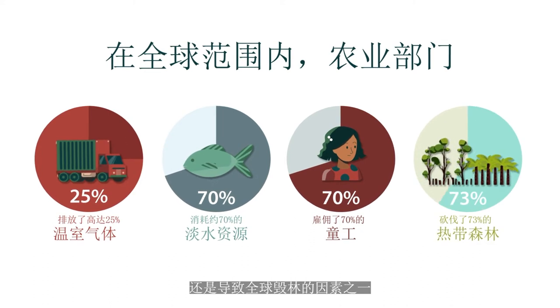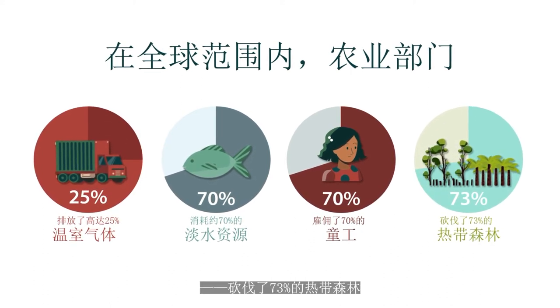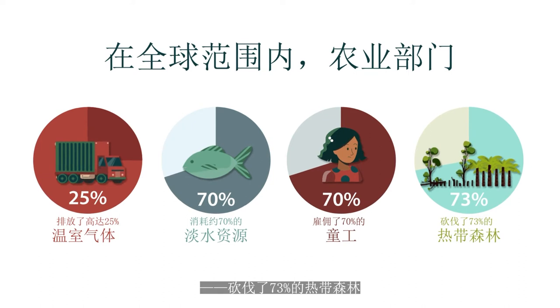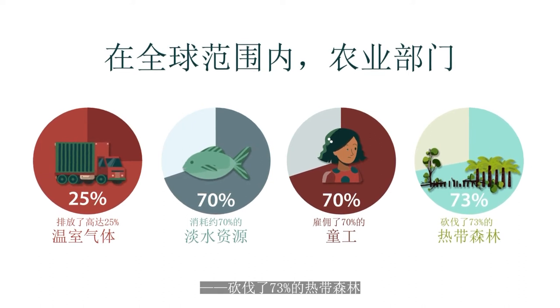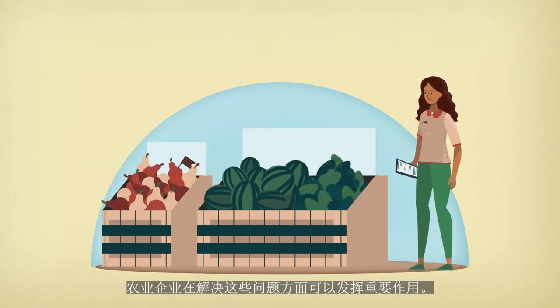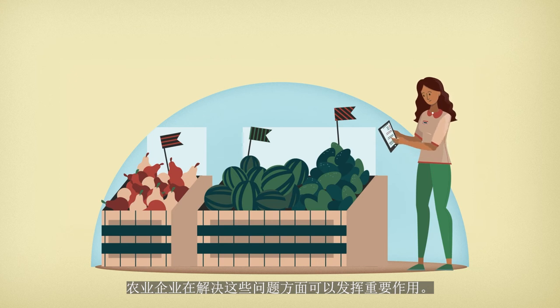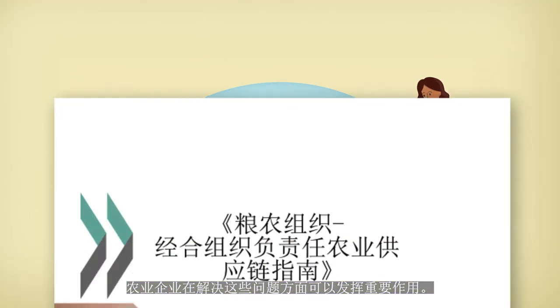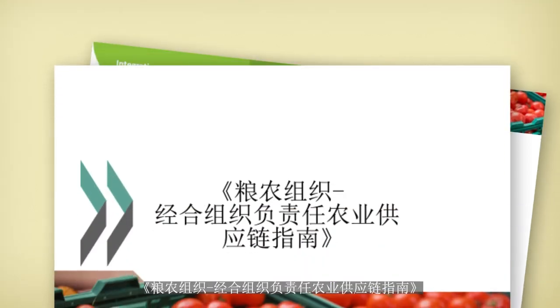It is also a driver of global deforestation, accounting for up to 73% of tropical deforestation. Businesses in the agricultural sector have an important role to play in addressing these issues.